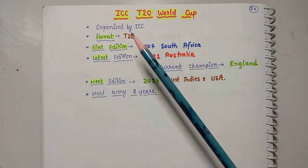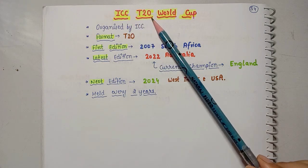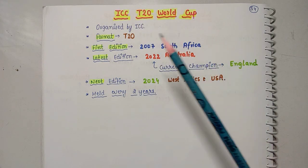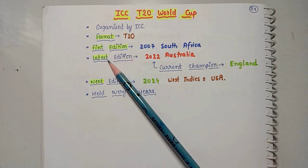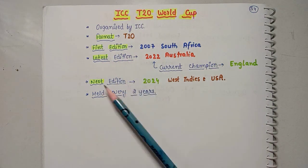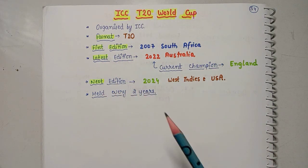What you need to remember: the last edition, the first edition, and the next edition of the ICC T20 World Cup. Also remember it is held every two years — these are the key things to note.